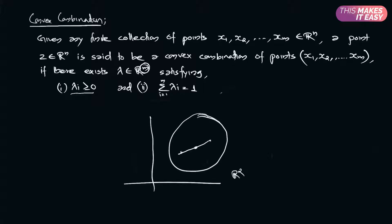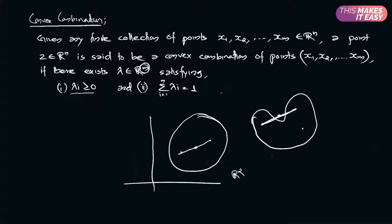Take another example: this is also a set. I am taking two points inside the set. The convex combination will lie like this, but this point is not lying in that set. So this set is not convex.